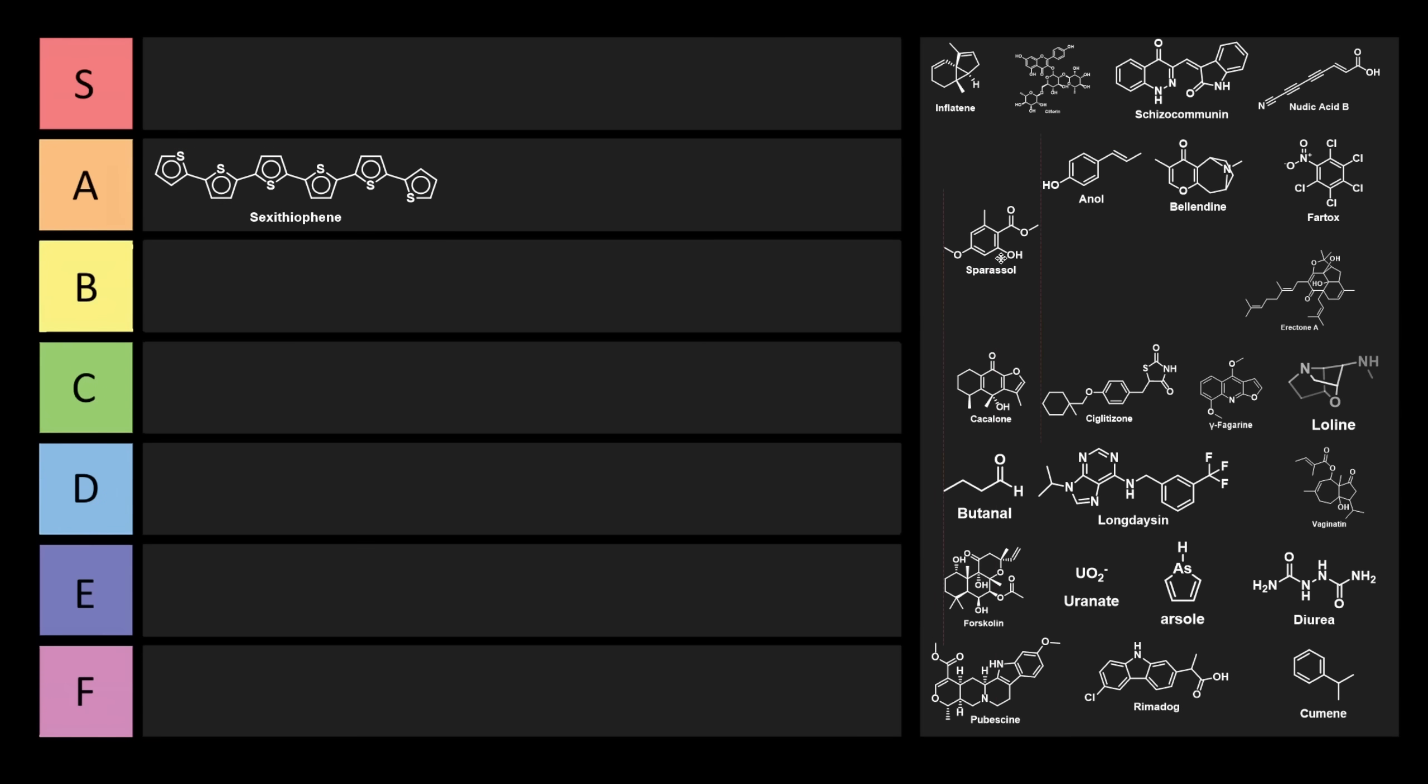Let's look at another one, like sparasol. So sparasol is an interesting one. Sparasol comes from a fungus called Sparasus crispa, which is known as the cauliflower fungus. So this is a natural product. I think sparasol is pretty good. It's a pretty unfortunate name. That one can go right into S tier, because I like that one a lot.